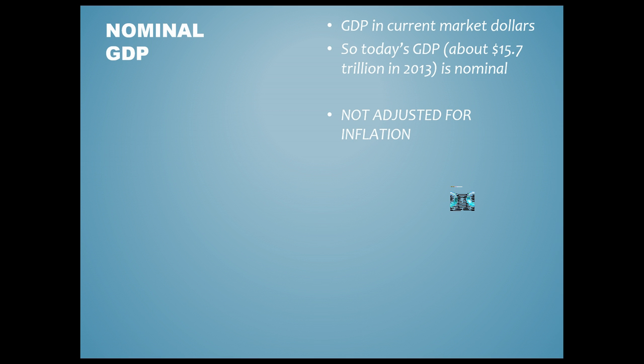Nominal GDP is just GDP in current market dollars. For example, the US GDP in 2013 was about 15.7 trillion dollars — that's in 2013 dollars. But since inflation happens, you can't compare 2013 dollars to dollars from 1950; they're completely apples and oranges.